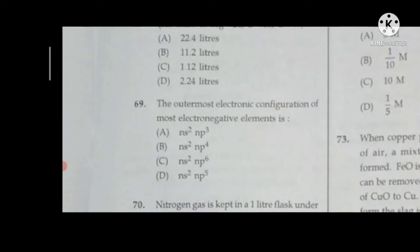Next question is 69. The outermost electronic configuration of most electronegative elements. The answer is option D. The answer is option C. This question is challenge.